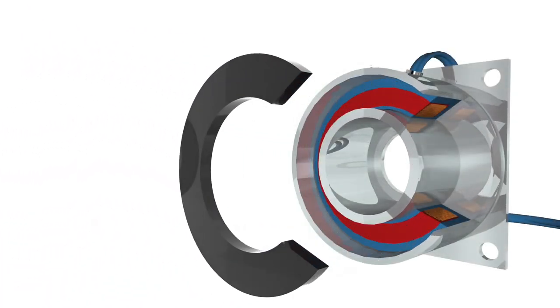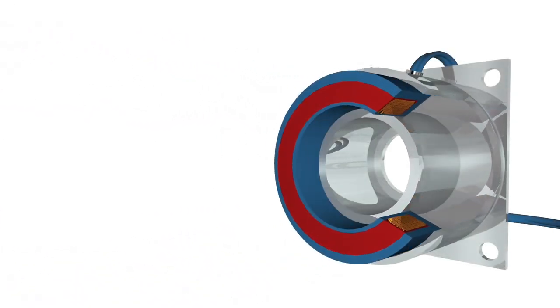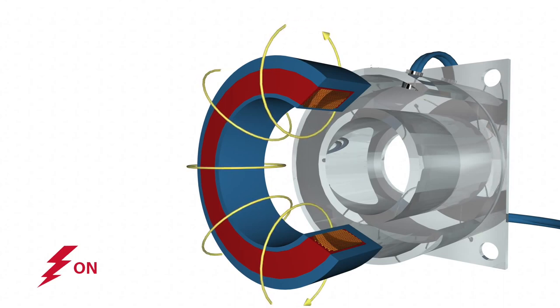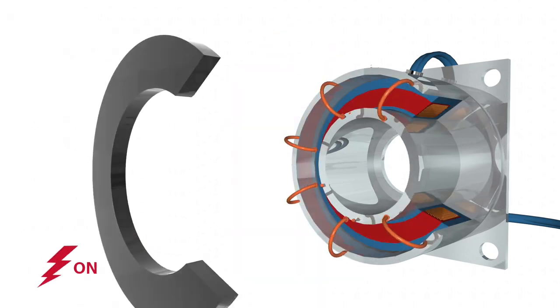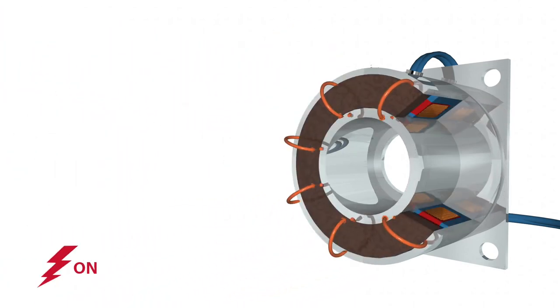Electromagnetic brakes operate via an electric actuation but produce torque mechanically. When voltage or current is applied to the brake, the coil becomes an electromagnet and produces magnetic lines of flux.